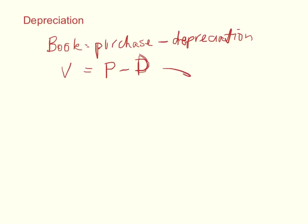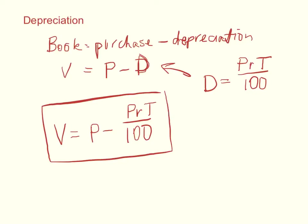So the formula that we use relies on the fact that book value equals the purchase price minus depreciation. So V equals P minus D. This depreciation can be written as this one, so what we're actually looking at is V equals P minus PRT over 100. Okay, so the book value is equal to that.